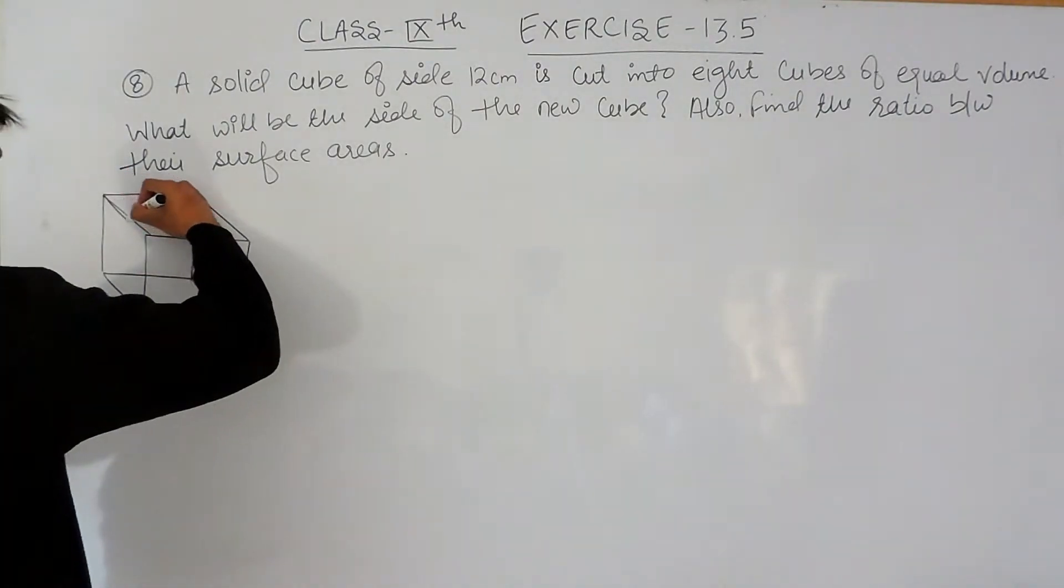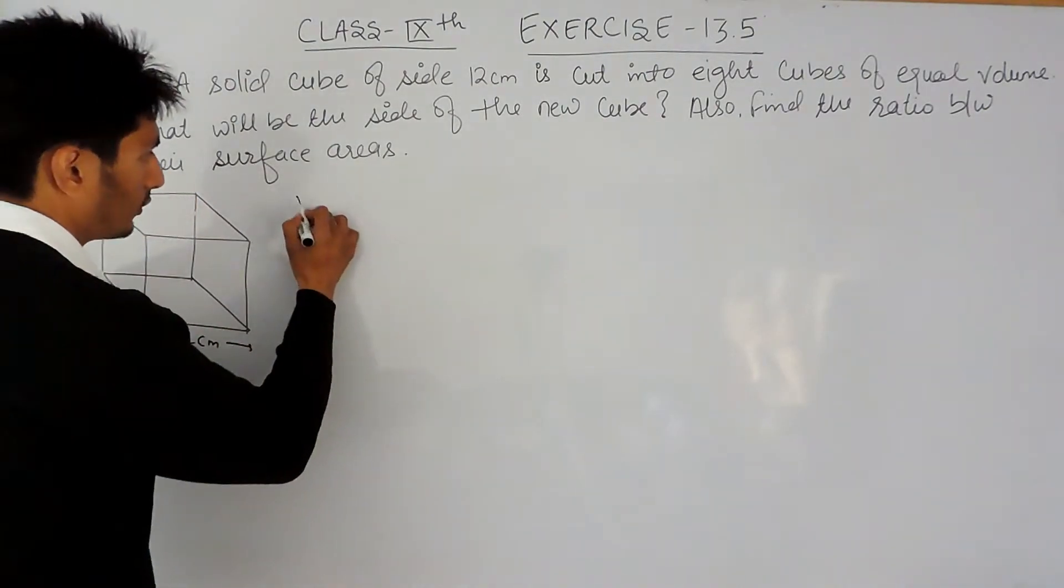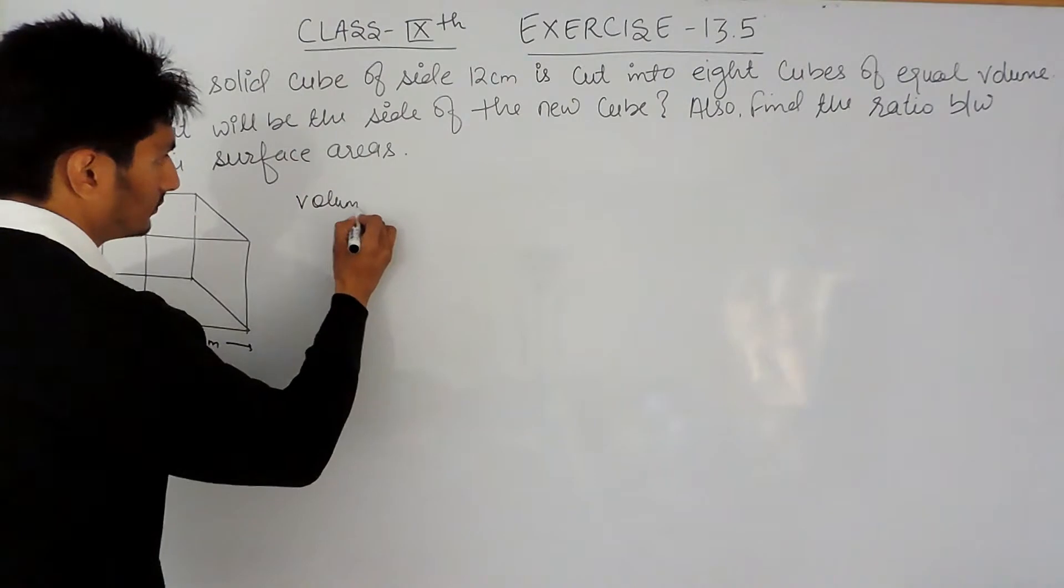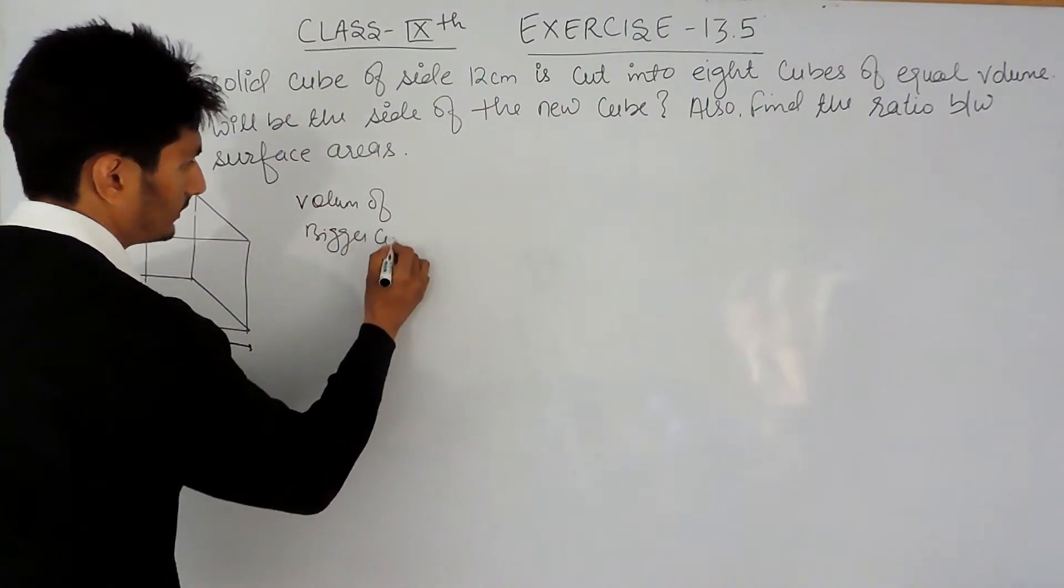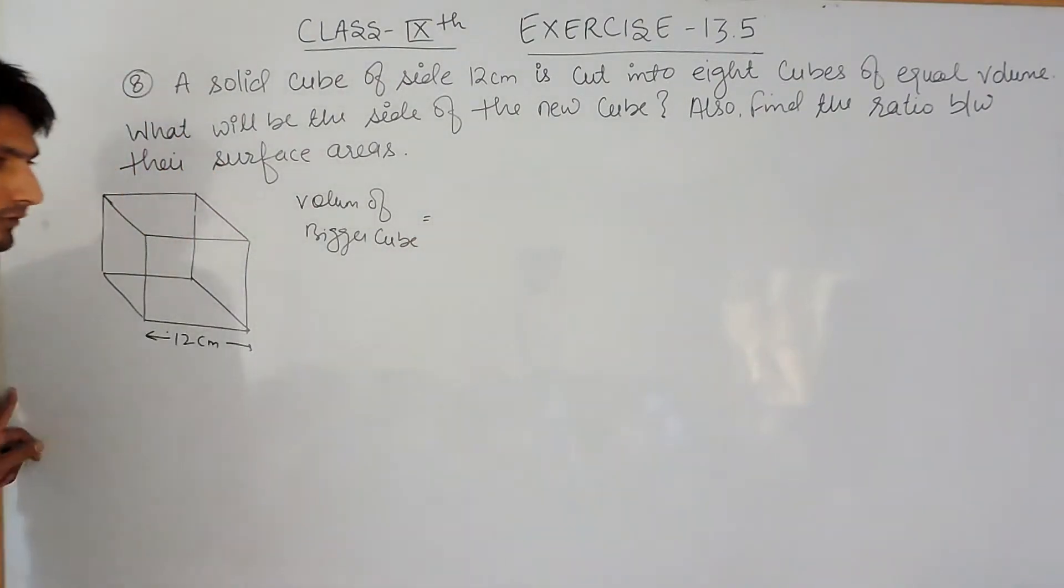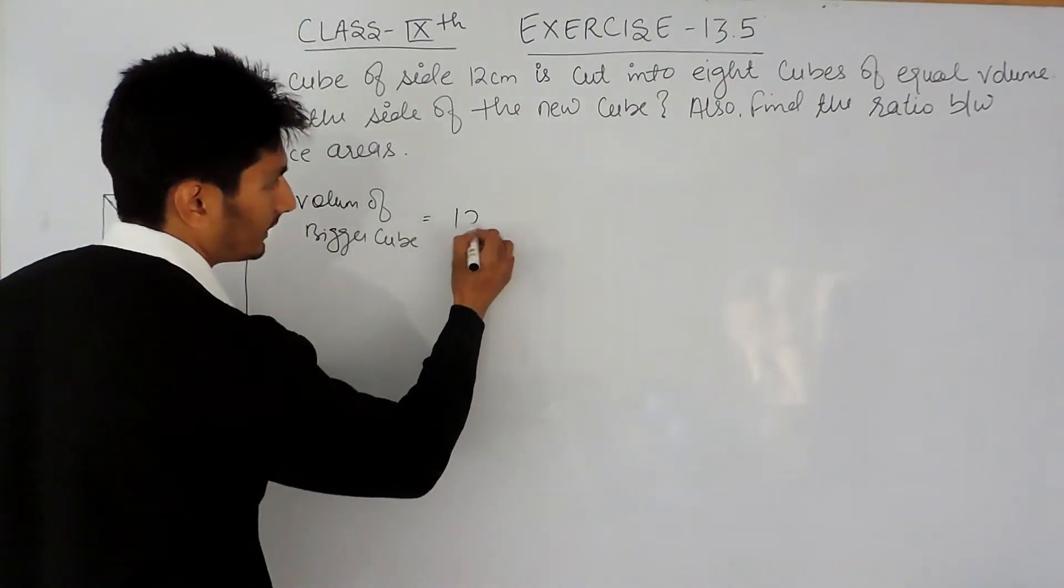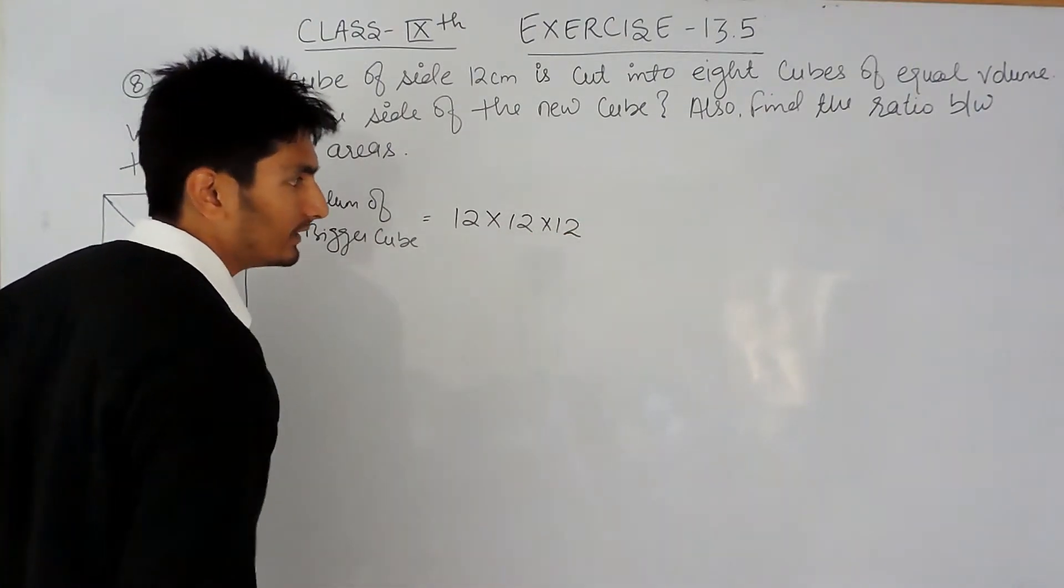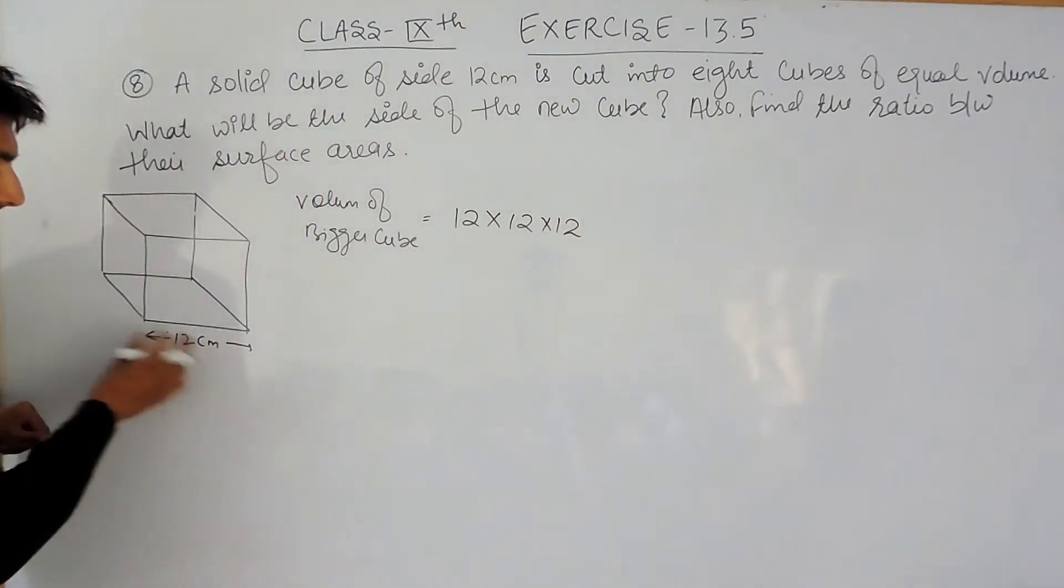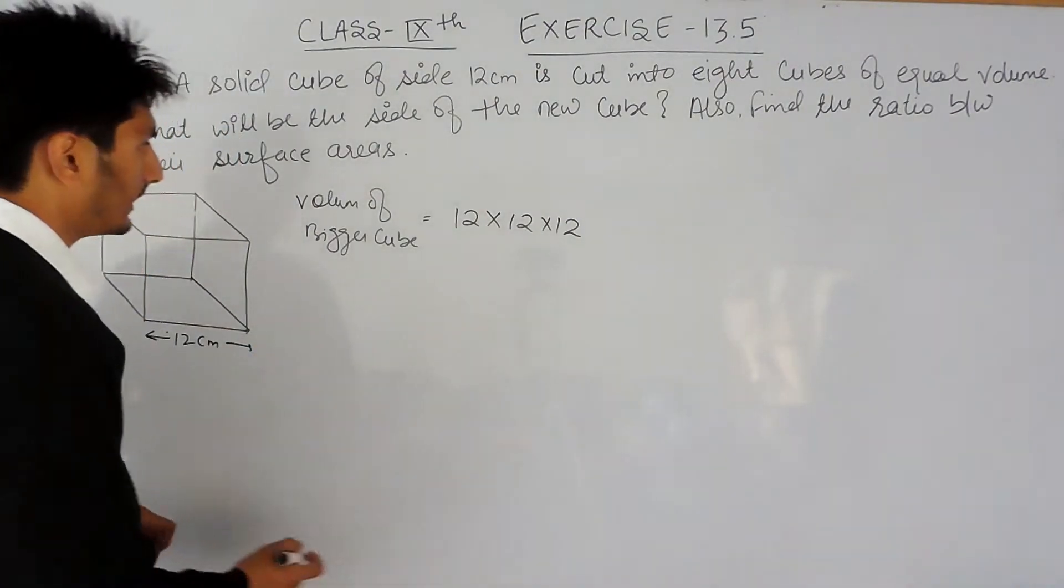So obviously, first of all, we have to find the volume of this cube. Volume of bigger cube. And the volume of a cube is a³, where a stands for its edge. So a³ will be a multiplied by a multiplied by a, so a multiplied 3 times. And a for this cube is 12.